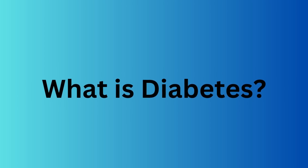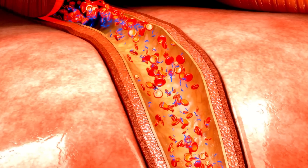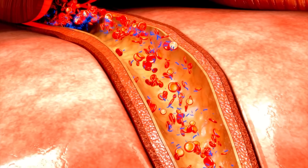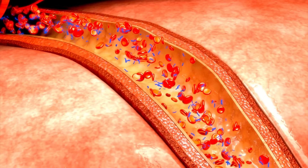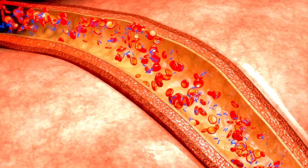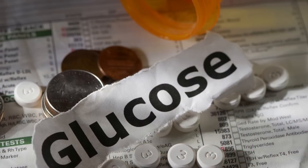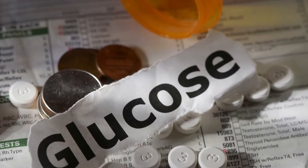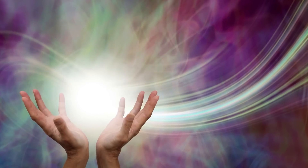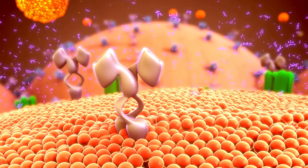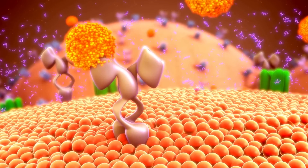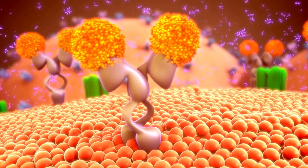What is diabetes? Diabetes is a chronic metabolic disorder that occurs when the body is unable to properly regulate blood sugar levels. Our bodies break down the food we eat into glucose, which serves as the main source of energy. However, in diabetes, the body either doesn't produce enough insulin or doesn't utilize it effectively, leading to high blood sugar levels.